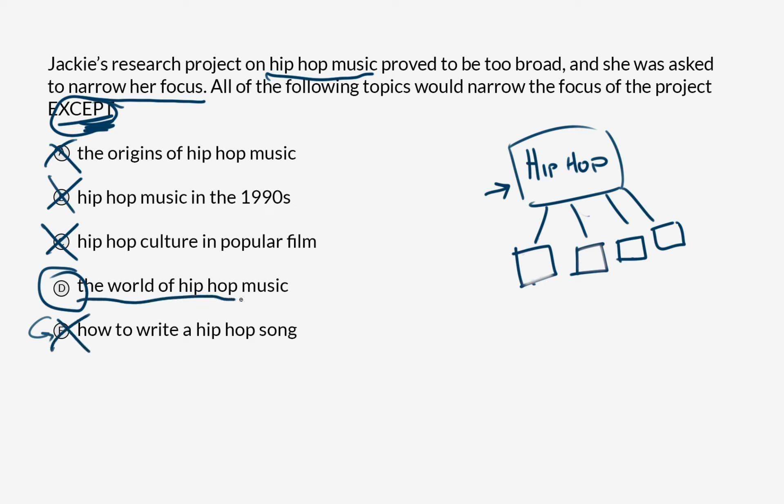So we find our answer, and it is 'the world of hip-hop music.' All of the other choices would be suitably narrow for Jackie's research project. But D is the only one that doesn't narrow the focus — it's still about all of hip-hop, which would make a great topic for an encyclopedia, but not for a single research project.